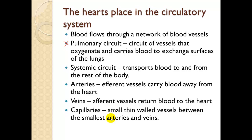Arteries are efferent vessels that carry blood away from the heart. Veins, or afferent vessels, return blood to the heart. This is why we have pulmonary arteries on the deoxygenated blood side and pulmonary veins on the oxygenated side. Capillaries are small, thin-walled vessels between the smallest arteries and veins, with a lumen about the size of one red blood cell diameter — they are very, very tiny.